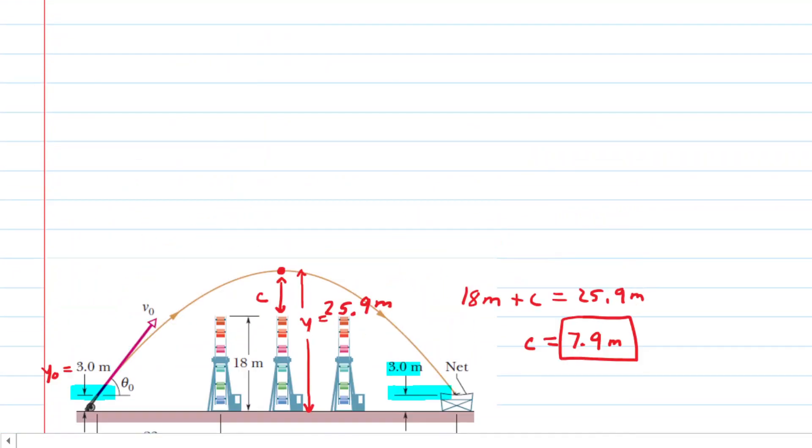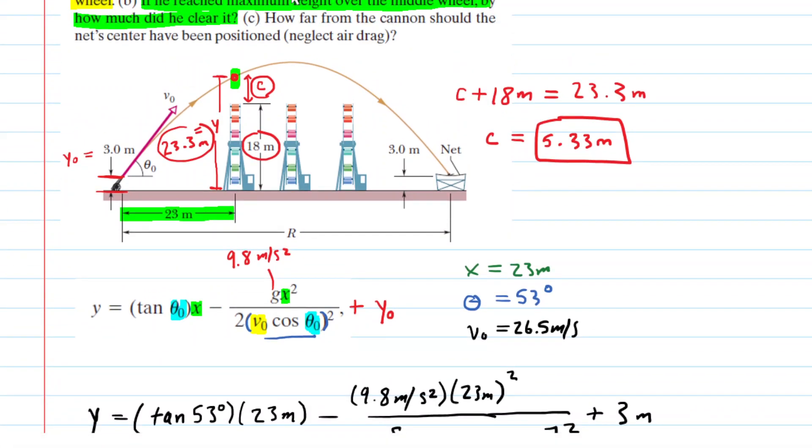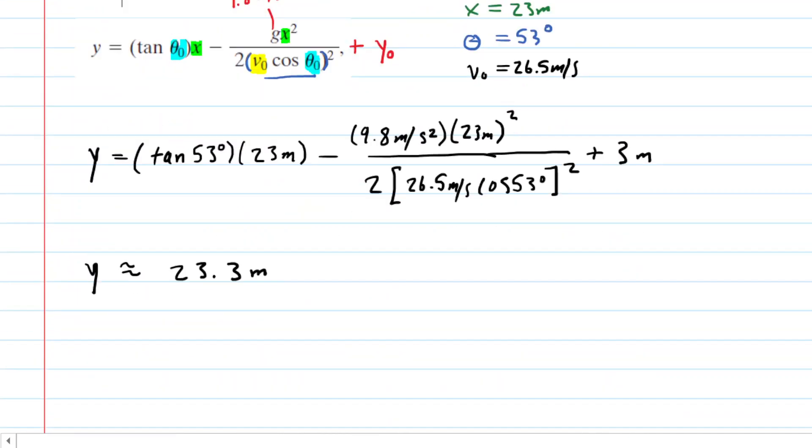Good news for part C. It asked how far from the cannon should the net's center have been positioned, neglecting air drag. Let's clean this picture up for a minute. We're basically looking for the distance between the center of the net and the launch point right here. But remember, that was just the range, and we had already calculated the range earlier.